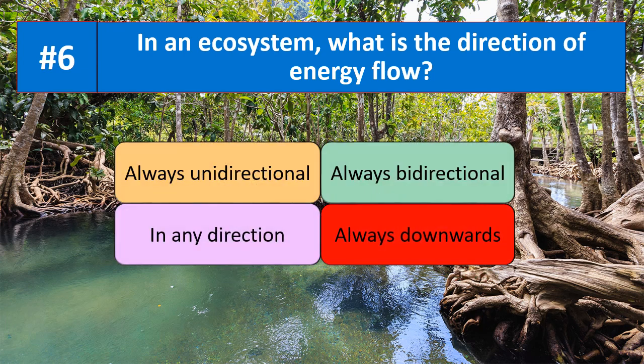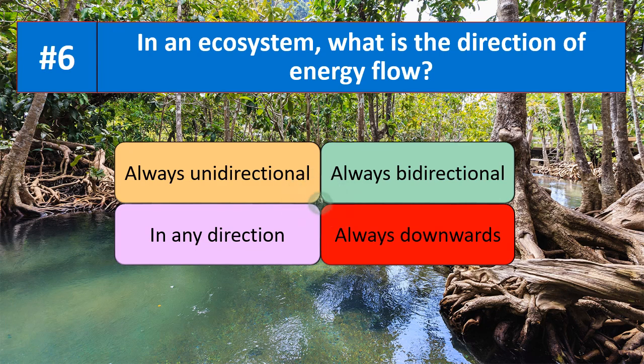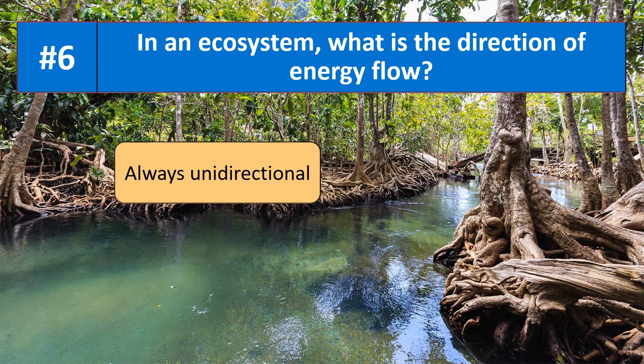Question number six: in an ecosystem, what is the direction of energy flow? Is it unidirectional, bidirectional, any direction, or downwards? The correct answer is always unidirectional.